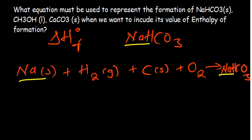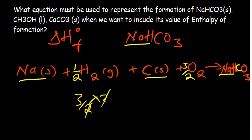To balance the hydrogen, we put one-half (½) in front of H₂. For carbon, there is just a single carbon in sodium hydrogen carbonate, so it remains as is. For oxygen, we have three oxygen atoms, so we put 3/2 in front of O₂ — because 3/2 multiplied by 2 gives us 3. We use fractions when balancing these equations.